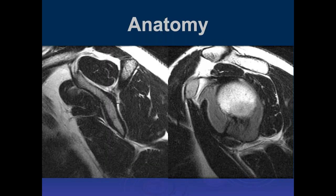Looking at anatomy in the sagittal plane: here's the scapular blade, the acromion process coming off posteriorly, the coracoclavicular ligaments. Going more laterally we can see the humeral head, the coracoid process, coracohumeral ligament, the acromioclavicular joint, and distal clavicle. The muscles visible are the subscapularis tendon anteriorly, supraspinatus, infraspinatus, teres minor posteriorly, and teres major with latissimus dorsi.